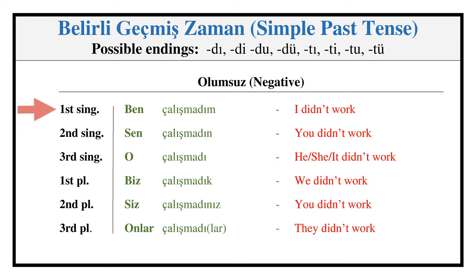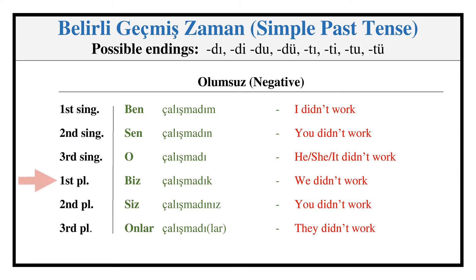Simple Past — Negative: ÇALIŞMADIM, ÇALIŞMADIN, ÇALIŞMADI, ÇALIŞMADIK, ÇALIŞMADINIZ, ÇALIŞMADILER.